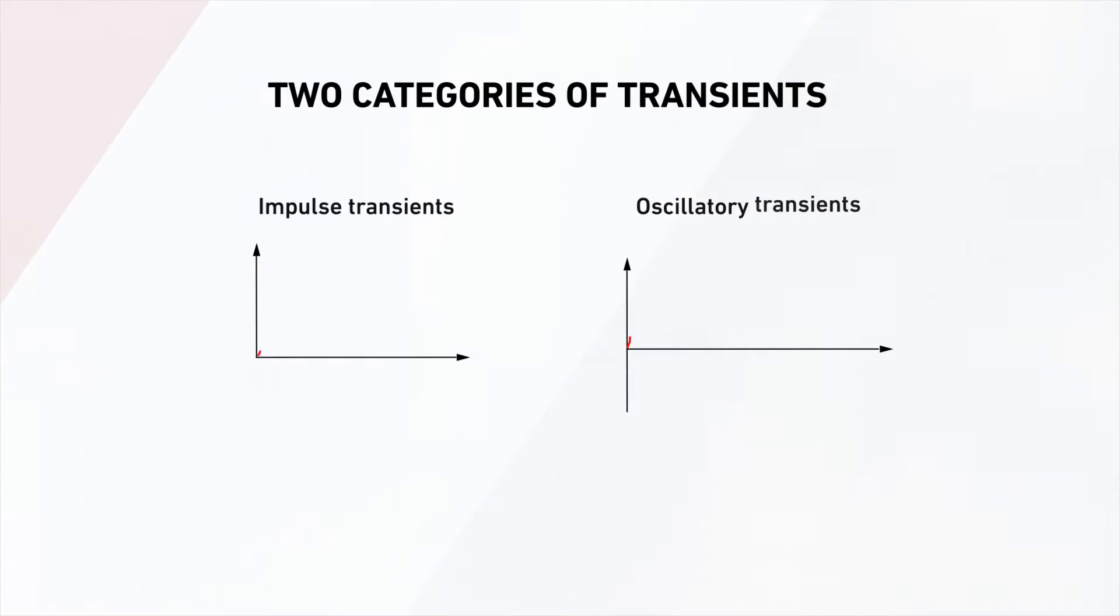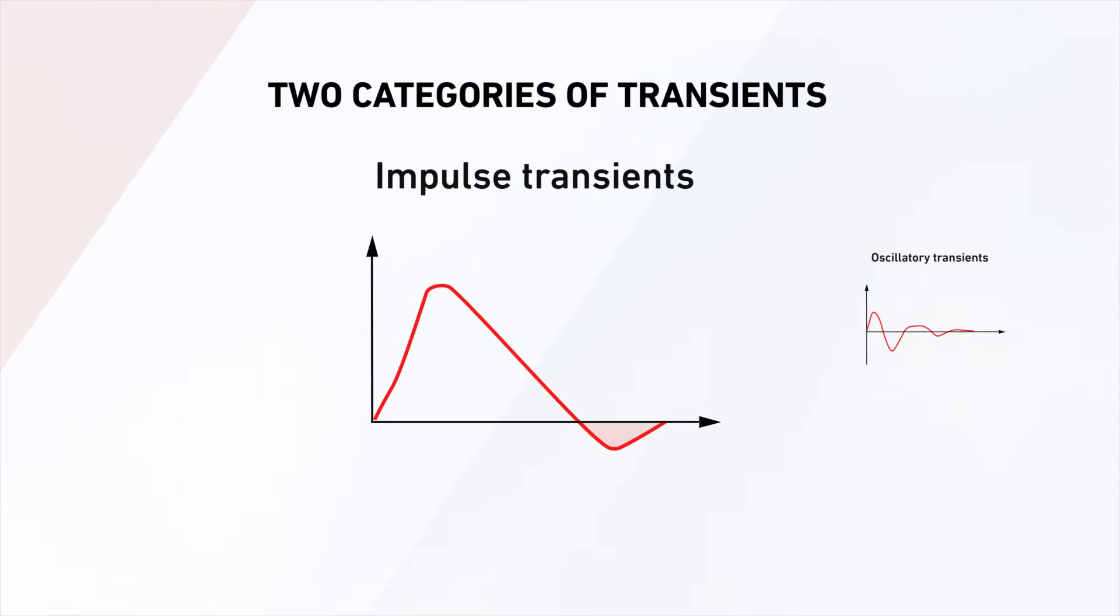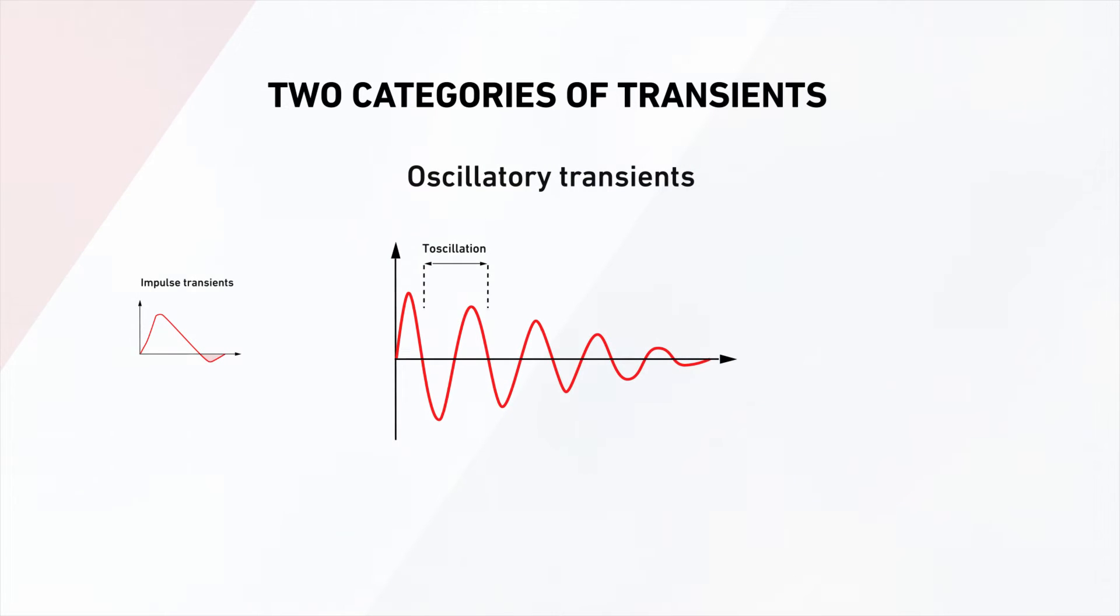Impulse and oscillatory transients are the two major categories of electrical transients. Impulse transients have the majority of the energy either in one direction or polarity, as well as a large decrease in the maximum value following the initial pulse. Oscillatory transients have a ringing component, where polarity rapidly changes as the values decay.